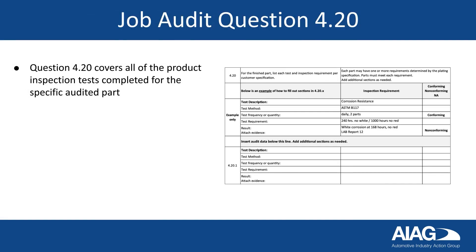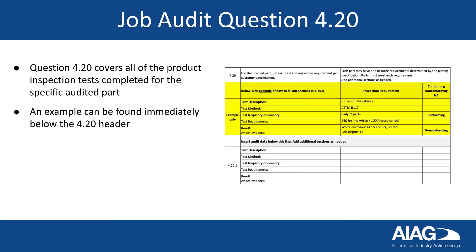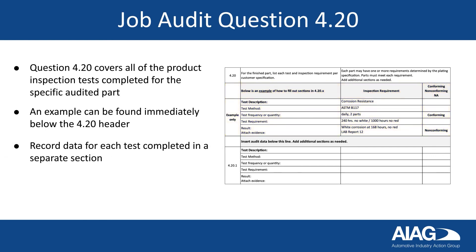Question 4.20 covers all of the product inspection tests completed for the specific audited part. An example can be found immediately below the 4.20 header, demonstrating how to complete this portion of the audit. For each test completed, record data in its own separate section. Sections have been included for two tests; copy and paste in extra sections as needed.